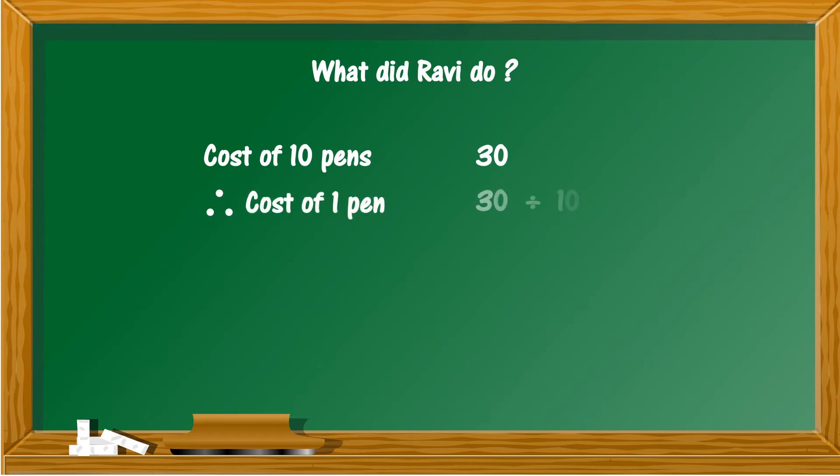So what did Ravi do? First, using division, he calculated the cost of one pen. Cost of 10 pens is 30, therefore cost of one pen is 30 divided by 10. Then using multiplication, he found the cost of six pens: 6 into 3 equal to rupees 18.